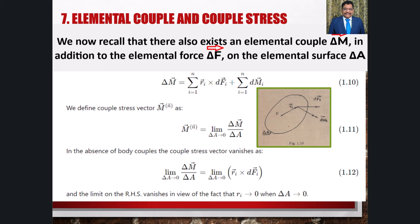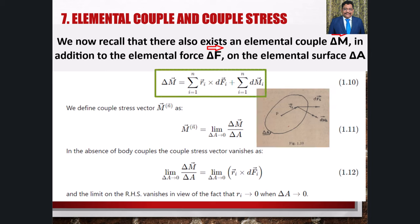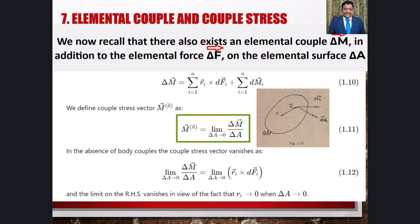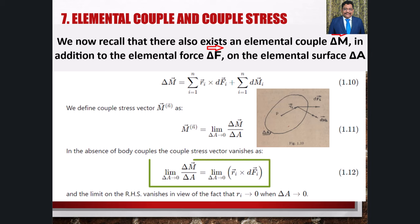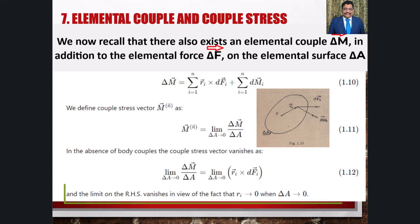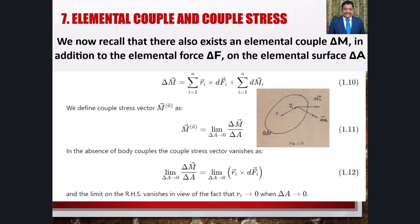हम surface element पर arbitrary particle को उसकी position vector r_i के रूप में point P के respect में consider करते हैं जैसा कि fig 1.1z में दिखाया गया है। यदि इस particle पर infinitesimal force d(phi) हो और concentrated body couple d(m_y) हो तो delta M को इस प्रकार लिखा जा सकता है: delta M = sum(i=1 to n) r_i × d(phi) + sum d(m_y)। हम couple stress vector m(N) को define करते हैं जहां delta M को delta A के ratio में लिया जाता है। Body couples की अनुपस्थिति में couple stress vector vanish हो जाता है क्योंकि जब delta A → 0, r_i भी 0 के करीब होता है।